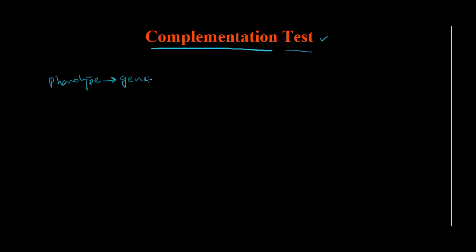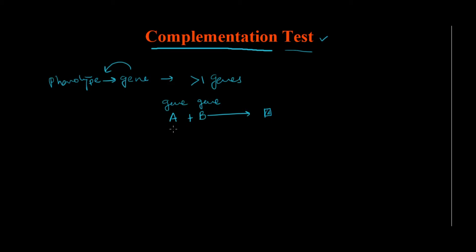Before we start with the complementation test, let's understand one particular concept first. We know the concept of complementation — the action of a gene. For any phenotype to be expressed, we need a gene for that. In some cases, more than one gene is required for a particular phenotype. For example, any pigment of a flower may be produced by the action of two genes — gene A and gene B. If there is a mutation in either of these genes — and when we say mutation, we are talking about a homozygous recessive condition — for this phenotype to be expressed, there should be at least one functional, wild-type copy of both genes present.